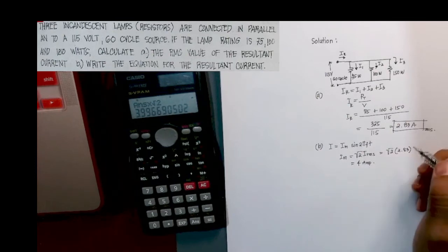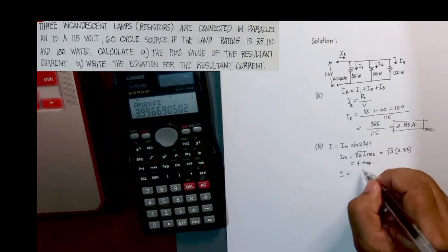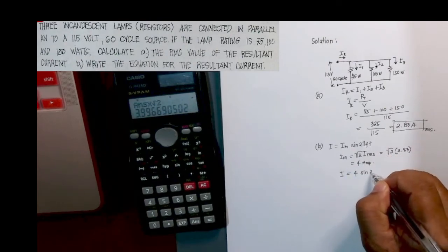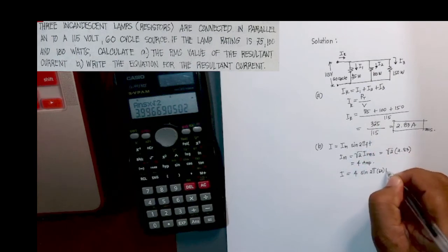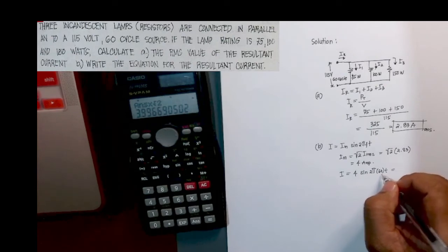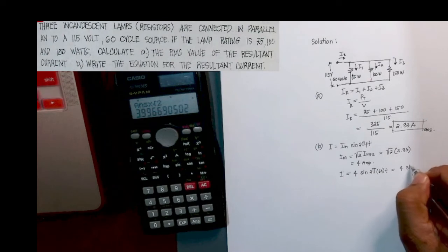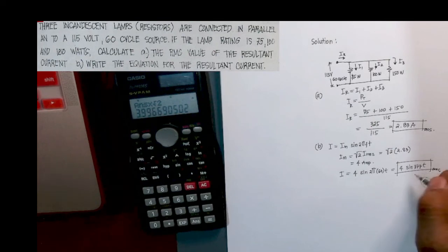And using this equation, so you have i, I am now using the maximum current value which is 4, so this is sine 2π. So your f here is 60, 60 cycle per second, times t. You are going to simplify 2 times π times 60, it will give us 4 sine 377t. So this will be your answer. This is the equation for the resultant current.